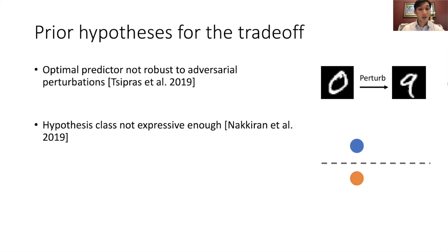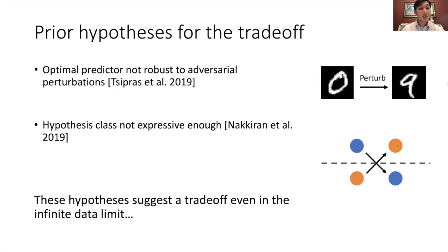Another hypothesis is that perturbations make the learning problem more complex, and the hypothesis class is just not expressive enough. For example, we may start with a dataset that's easily separable by a linear classifier. But after some perturbations, the dataset requires a more complex, nonlinear classifier to fit. These prior hypotheses suggest a trade-off even in the infinite data limit, which suggests that the trade-off is inherent.